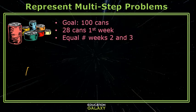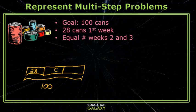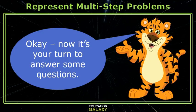Let's think about this problem. The students bring 28 cans the first week. Their goal is 100, so they need to bring some more to make it 100. Let's mark the 100 down. Now they have two additional weeks to bring these cans, and they want to bring an equal number each week, so we're going to divide that exactly in two, and we call this C. So the first week plus the second week plus the third week will equal 100, and the second and third weeks are the same value. It's your turn to answer some questions.